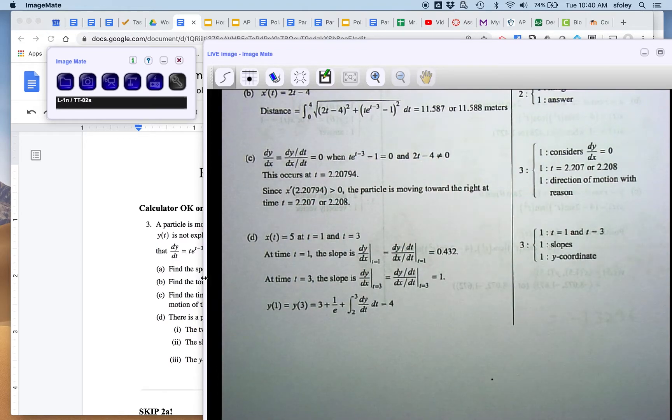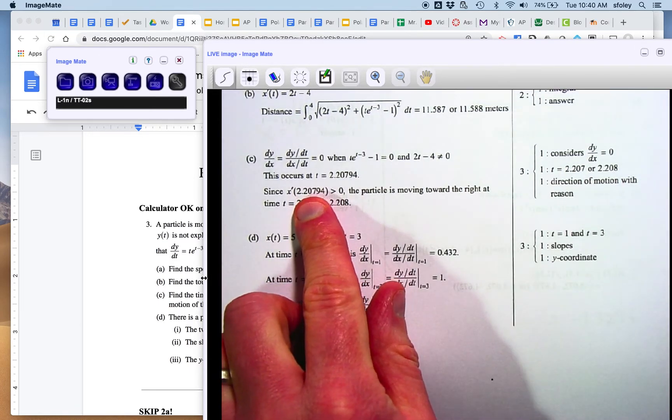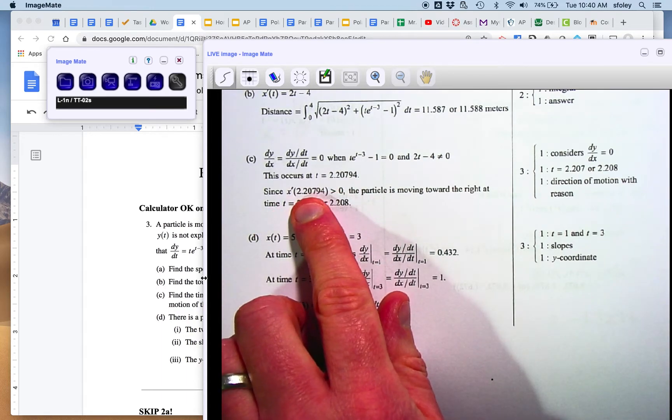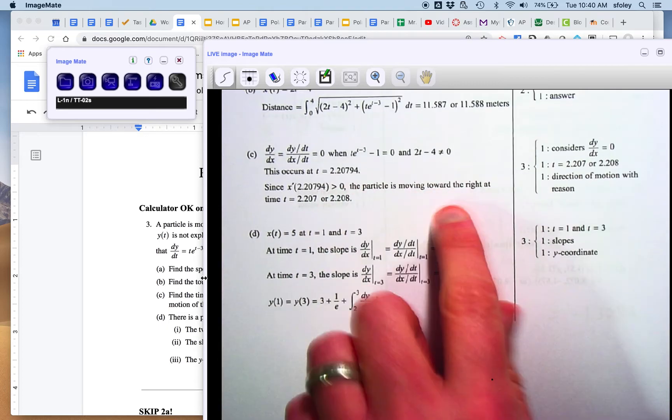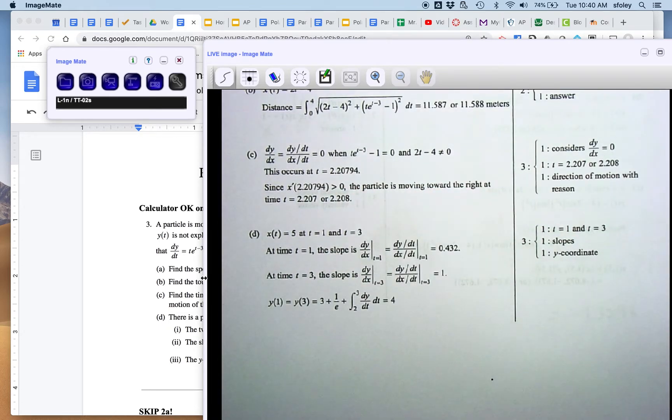How do you tell if a particle is moving to the left or the right? You look to see whether its x-coordinate is increasing or decreasing. How do you tell if something is increasing or decreasing? Whether its derivative is positive or negative. And so you plug that time that we just got into the x-derivative, and you see that it's positive, so it must be moving to the right.